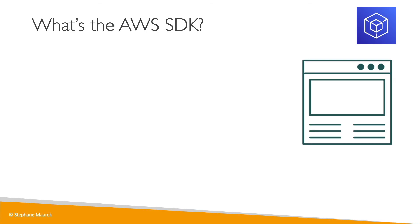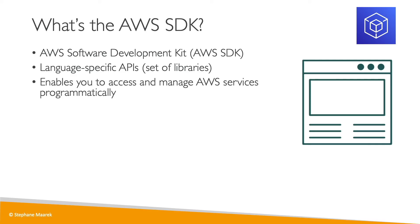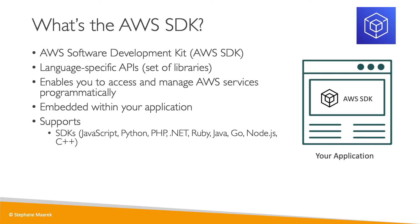So what's the AWS SDK? SDK stands for Software Development Kits. This is a set of libraries that is language specific, so you'll have an SDK for different programming languages. It allows you to access and manage your AWS services and APIs programmatically, embedded within your application code rather than used in a terminal. It supports many programming languages, such as JavaScript, Python, PHP, .NET, Ruby, Java, Go, Node.js, and C++.